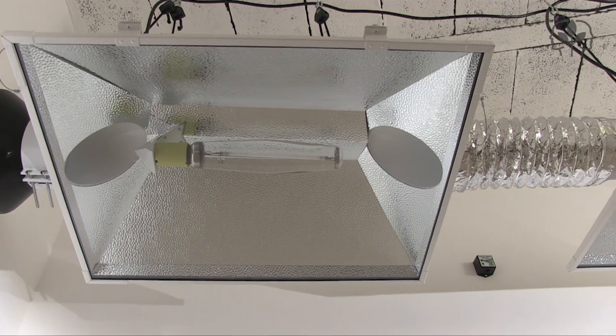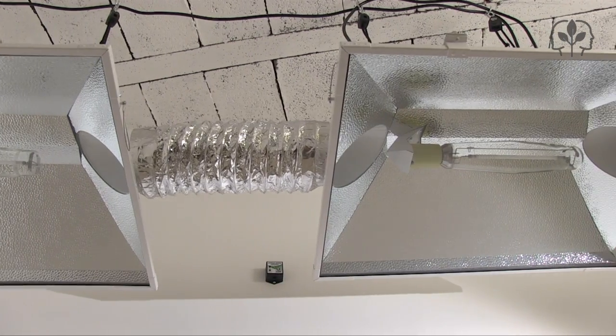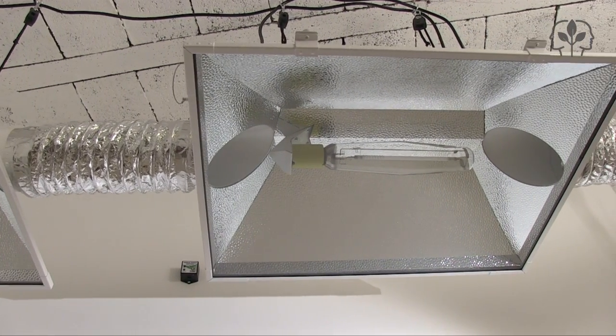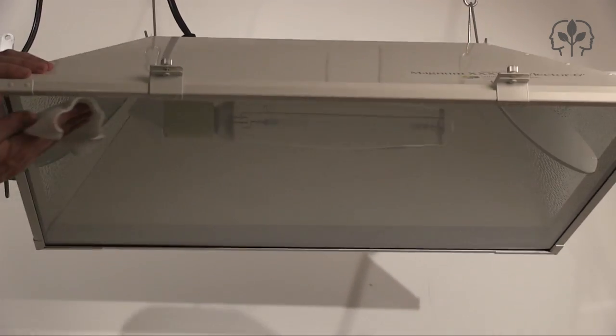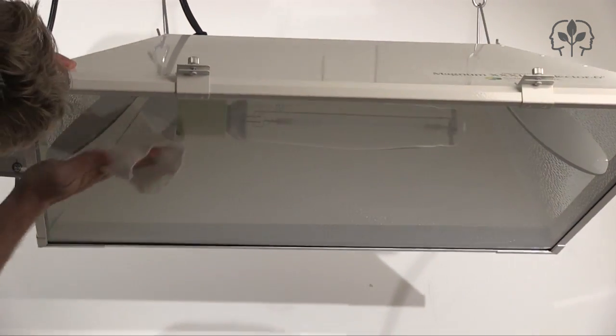When air-cooled lights are set up the right way, they can remove up to 50% of the heat generated by the grow lamp. The glass panel in air-cooled reflectors does absorb some of the light, particularly UV, so it's important to keep your reflector's glass panel clean and free of dust and finger marks.